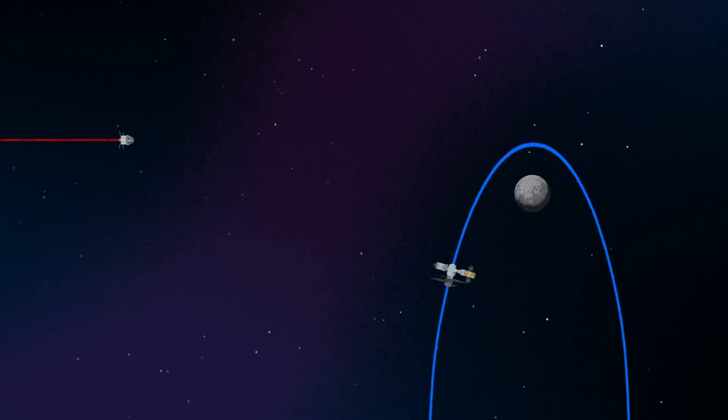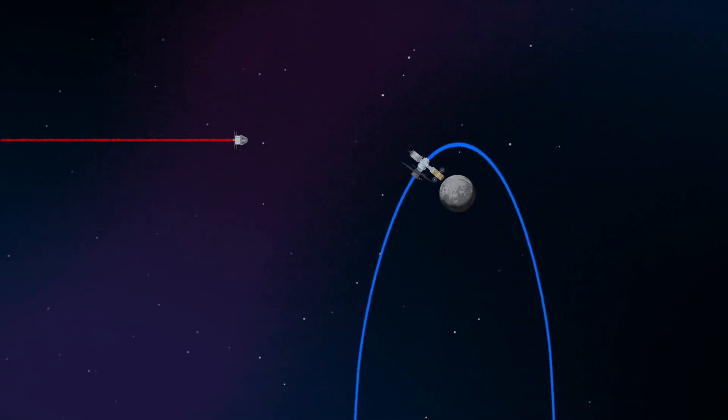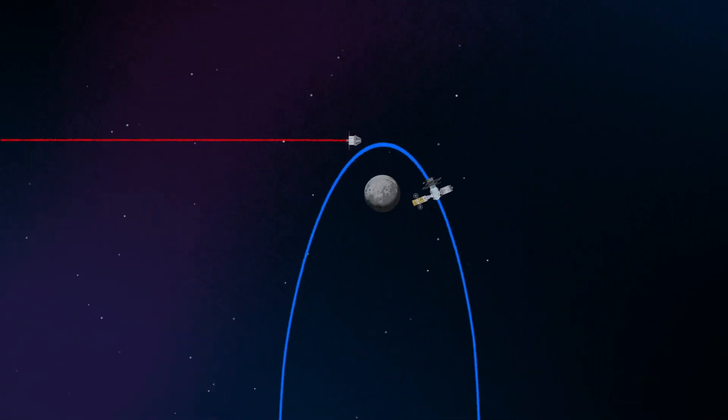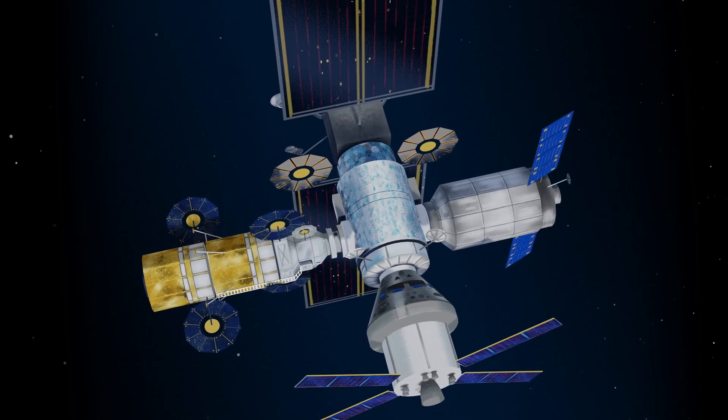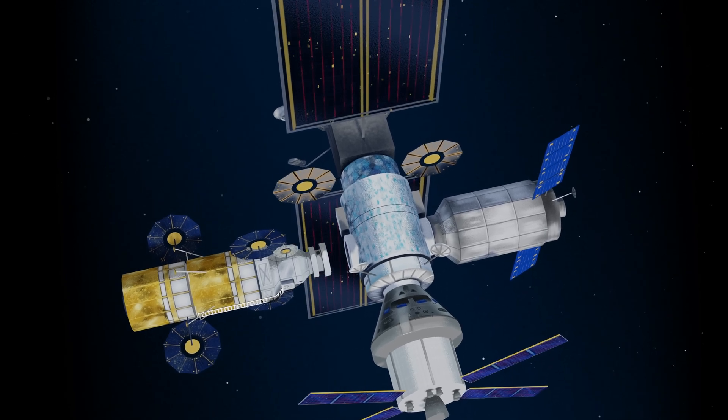Returning to our crew as they approach Gateway, the Orion must match the elliptical orbit of the station in order to successfully dock. Once on board, pre-selected crew members transfer to the lunar lander, while those assigned to Gateway remain on station.